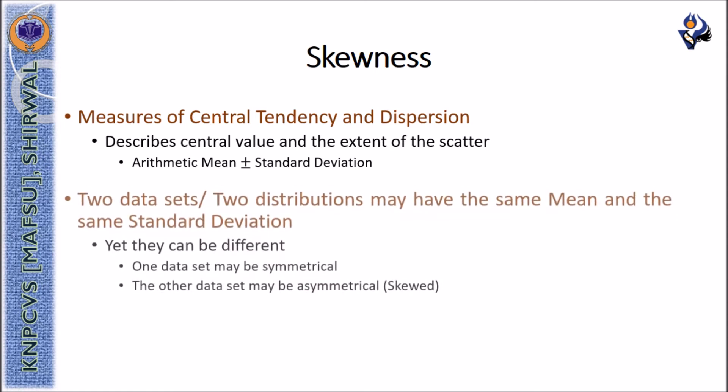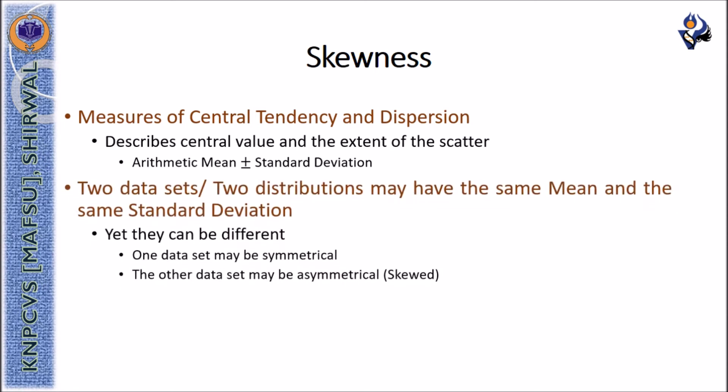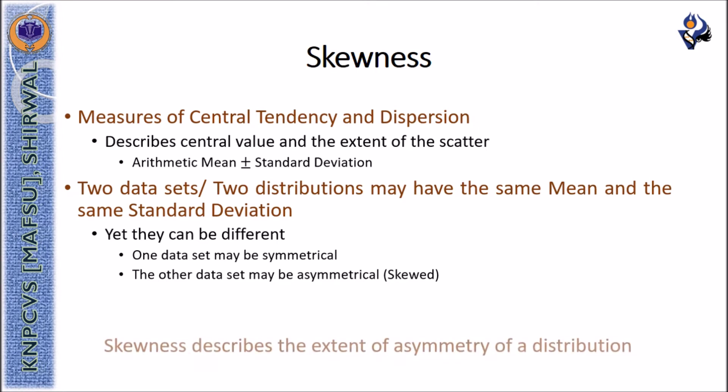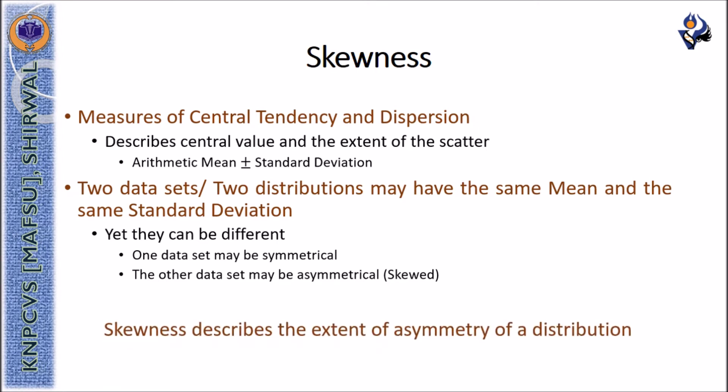Two data sets or two different distributions may have the same mean and the same standard deviation, yet they can be different from one another. One data set may be symmetrical while the other may be asymmetrical. Skewness describes the extent of asymmetry of a distribution.